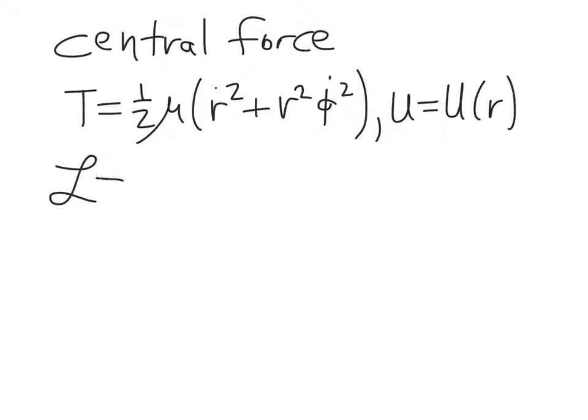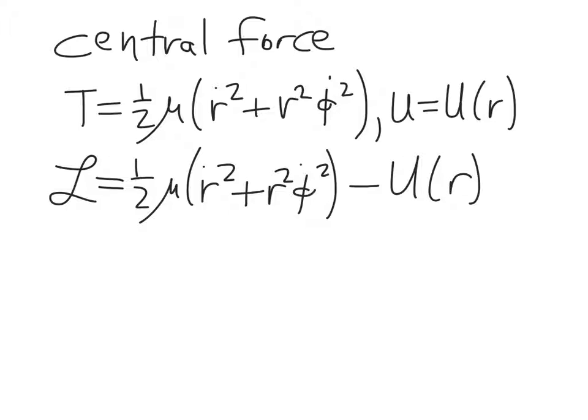Okay, so now our Lagrangian is just the difference between these two things, minus U of r. And now in order to work out our Hamiltonian equations for this system, we need to calculate what the generalized momenta are. And remember, the generalized momenta are this: it's the q_i dot derivative of the Lagrangian.